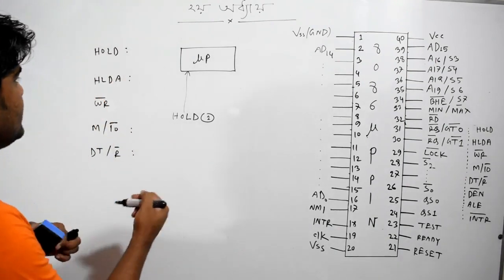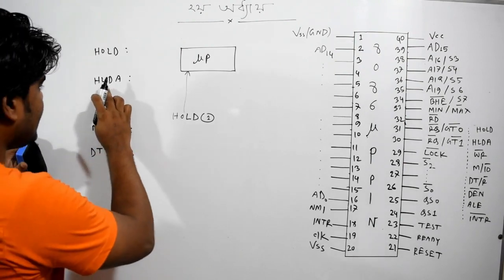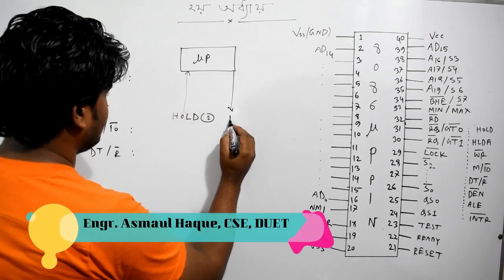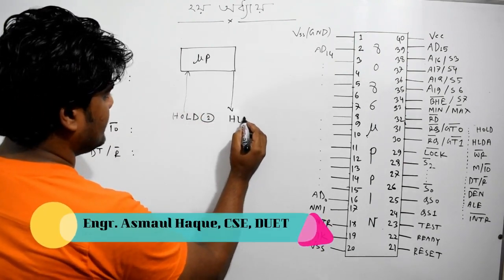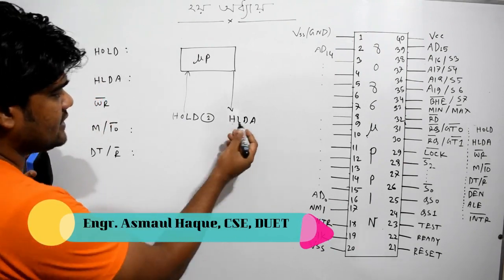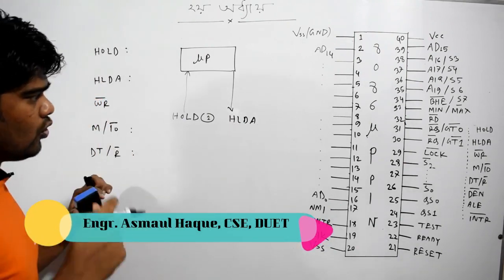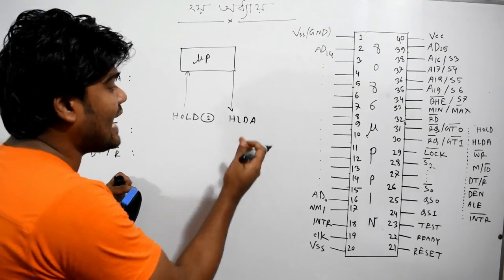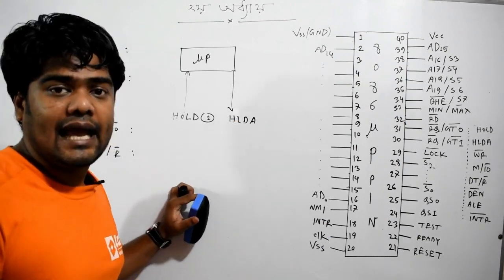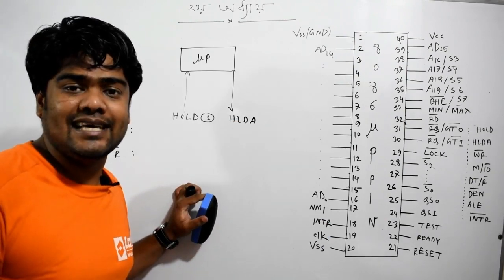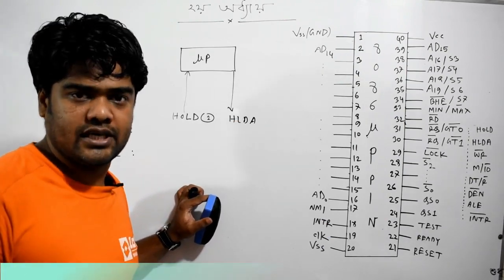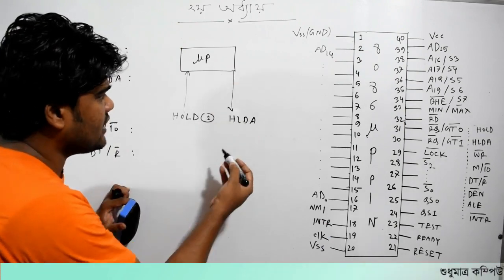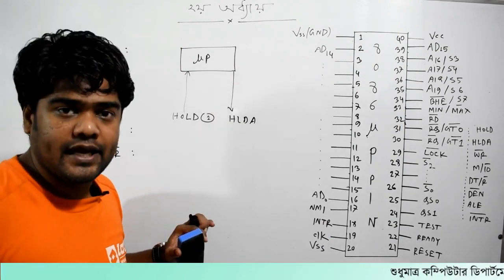Now what do we do? So, this is a vector which is called HLDA, which is called Hold Acknowledgement. So the microprocessor — what do you do?